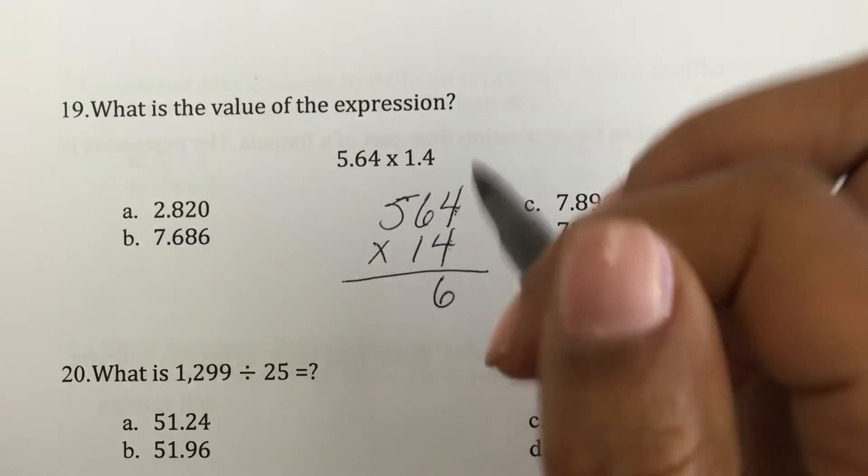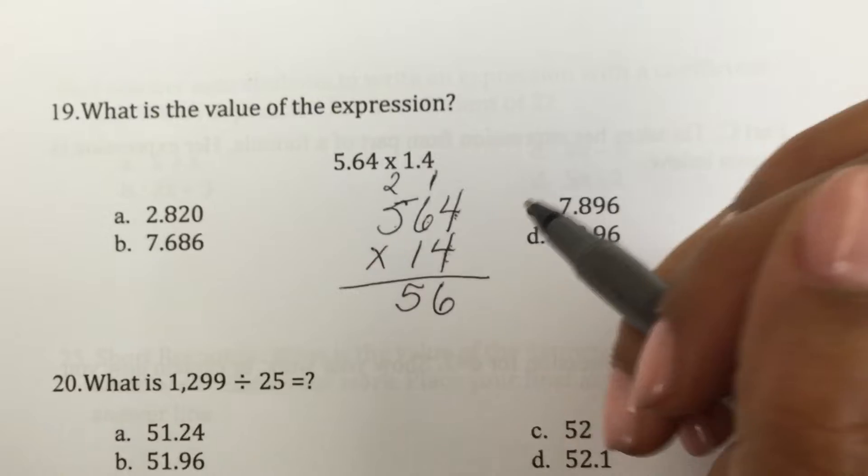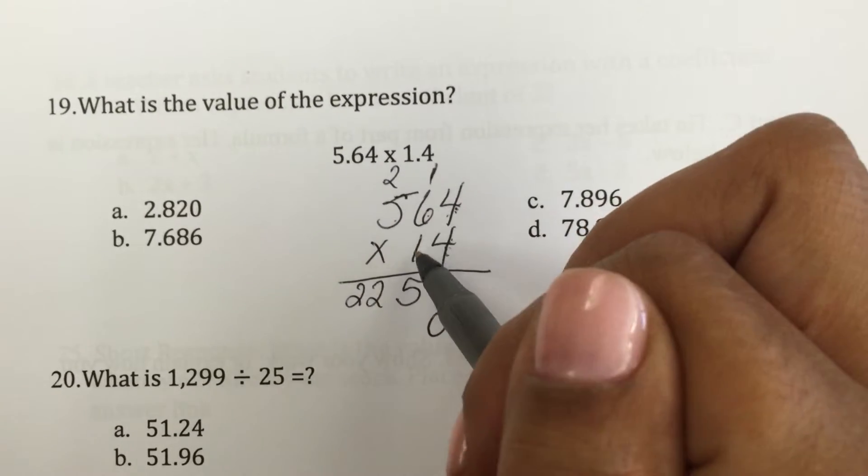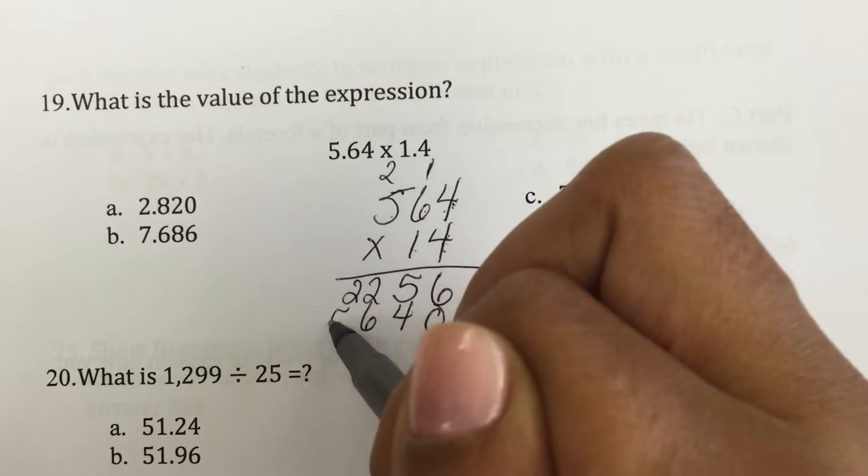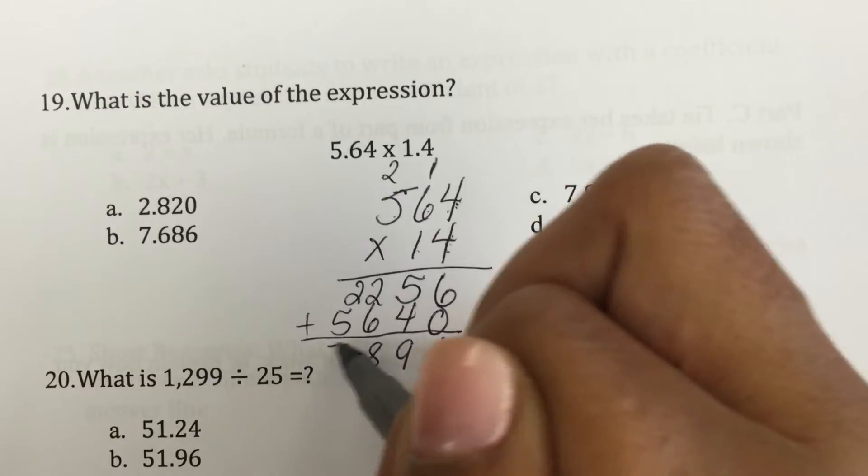4 times 4 is 16. 4 times 6 is 24, plus 1 is 25. 4 times 5 is 20, plus 2 is 22. And I like this because it's all by ones. 1 times 4, 1 times 6, 1 times 5. 9, 8, 7.